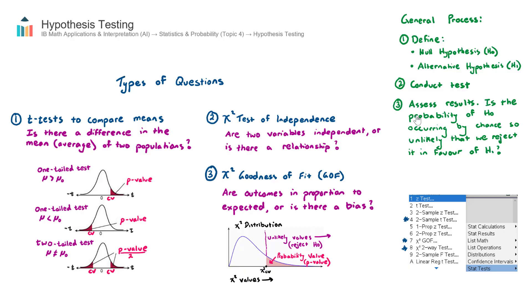Step three, we now want to assess the results and decide. And this is the important question to think about. And I recommend repeating this and thinking about it. Is the probability of the null hypothesis occurring by chance so unlikely that we reject it in favor of the alternative hypothesis?